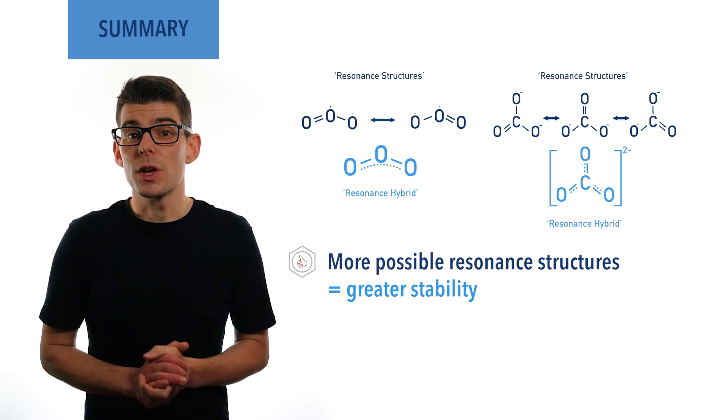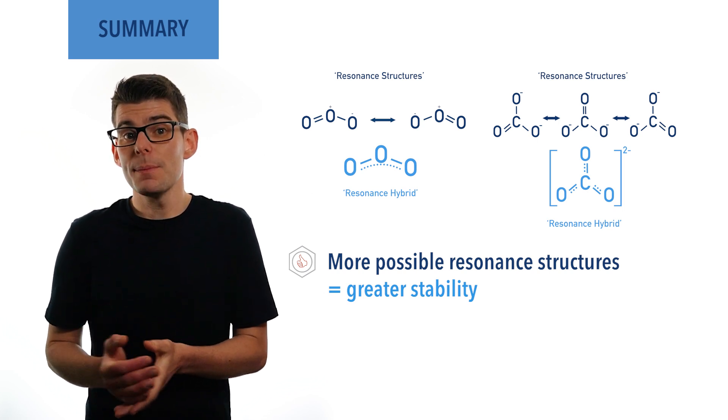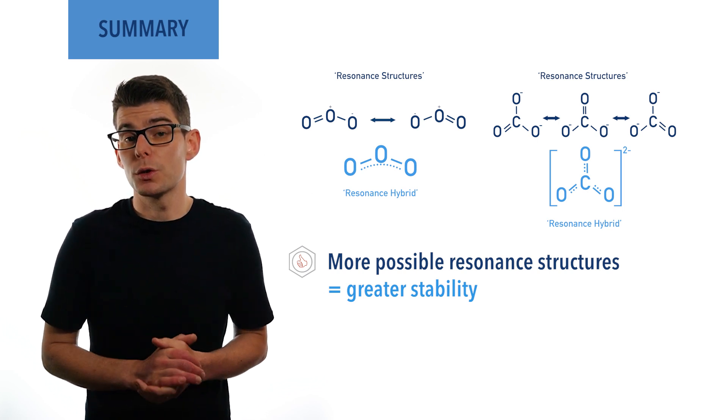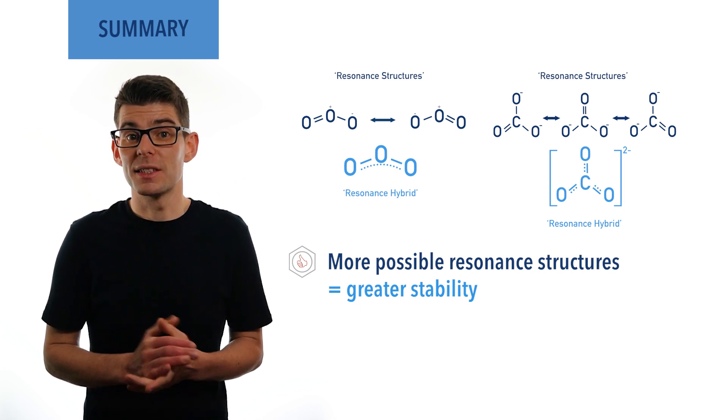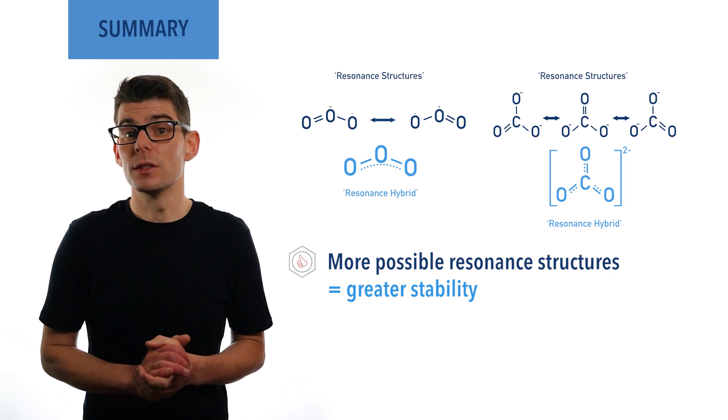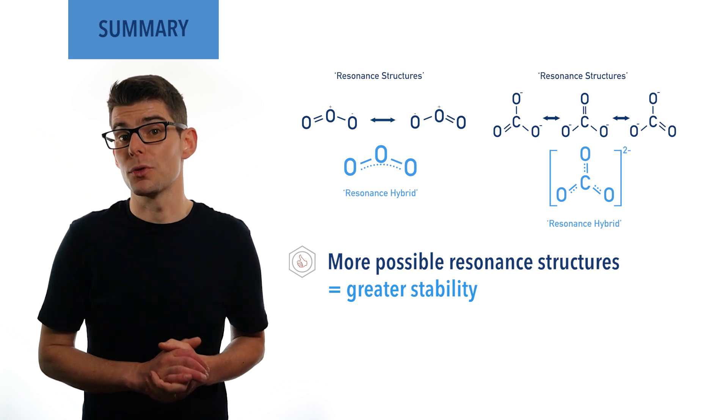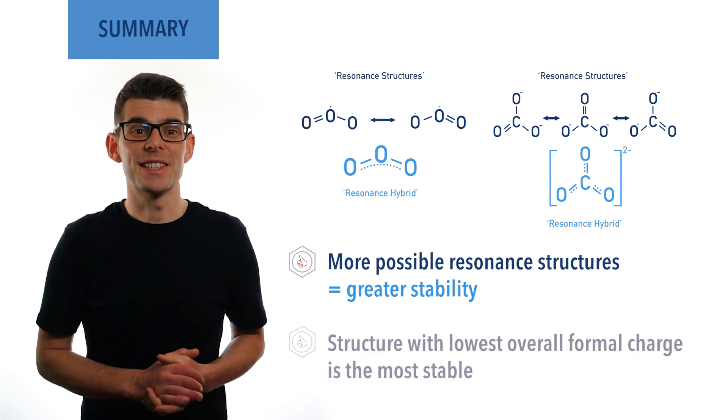When deciding which resonance structure is most stable and contributes most to a resonance hybrid, we use an idea called formal charge. In simple terms, this means the resonance structure that gives the lowest possible charges on all atoms is the most stable.